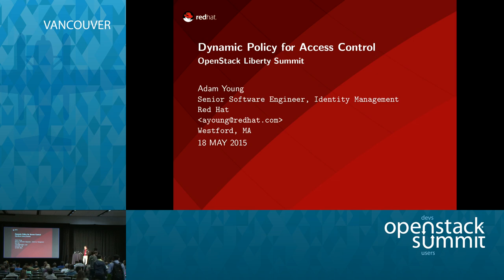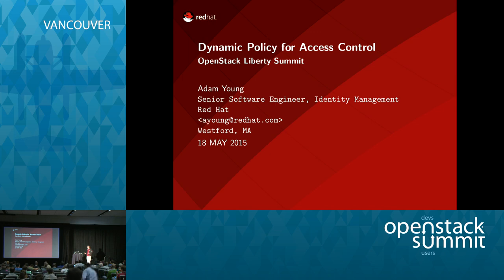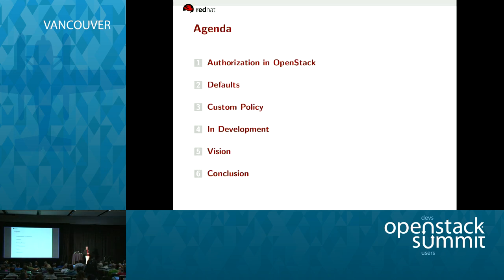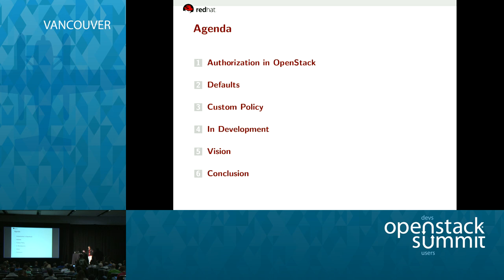I'm a senior software engineer. I work in identity management at Red Hat. Although at this point, I've worked longer on Keystone than I did on anything else anywhere, including the other identity management stuff. Here's what I'm going to talk about today: an overview of how authorization works in OpenStack, specifically on the policy side, the defaults you get from the Git repos or packages, and how to customize policy.